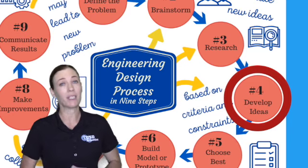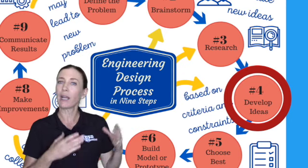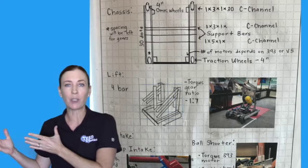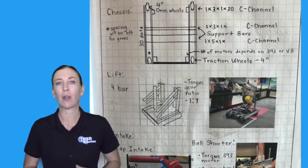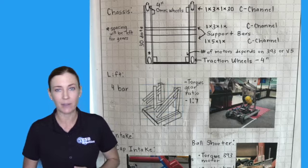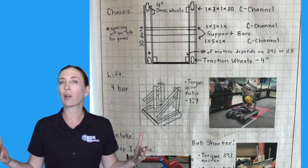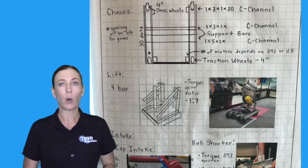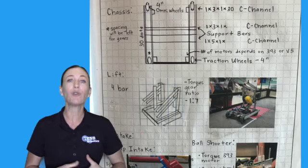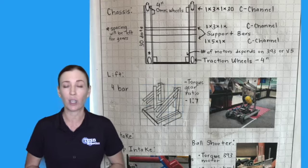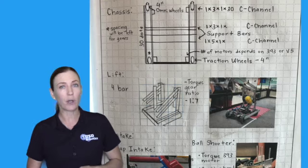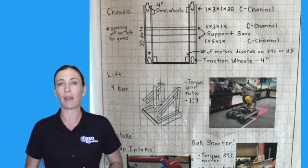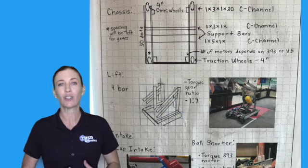Step number four is to develop ideas. You take all of your ideas from your brainstorm and from your research and combine them together to come up with some amazing ideas. It doesn't matter if you are the best sketcher in the world or just starting out — you must draw your ideas to communicate them. It is also very important that you include dimensions, labels, and anything that can help you communicate your ideas to your team.